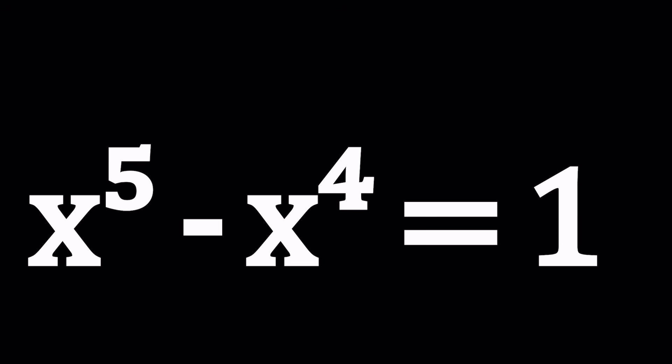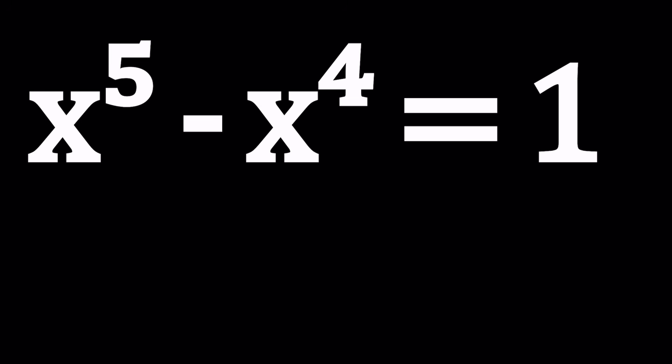But then the question comes up: is this equation factorable? Let's go ahead and put everything on the same side and see if we can factor this expression. So the question is, is x to the fifth minus x to the fourth minus one factorable? Probably not very easily, but we're going to do a little manipulation to make it factorable.